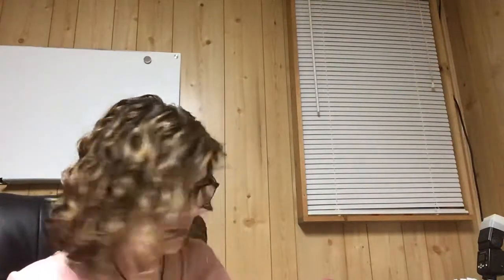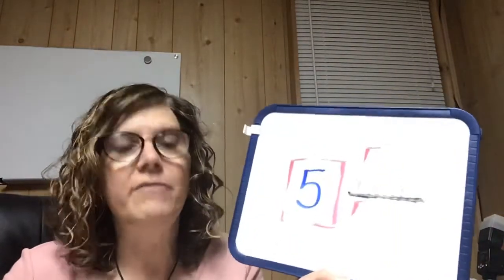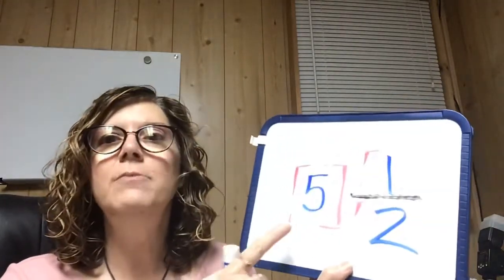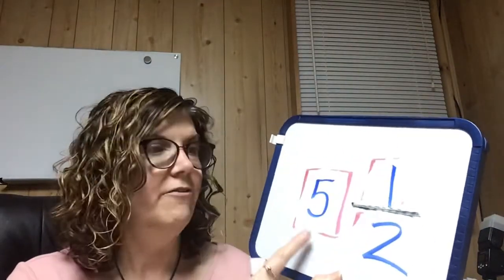Number three has orange rectangles divided in half. Looking through them: the first five rectangles have both halves colored — so the whole number is five. On that last rectangle, it's divided into two pieces so the denominator is two, and only one piece is colored. So the mixed number is five and one-half.